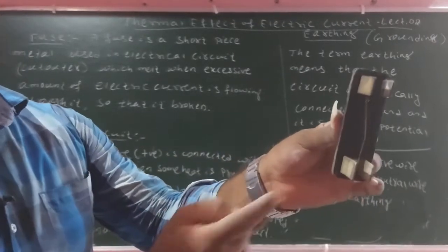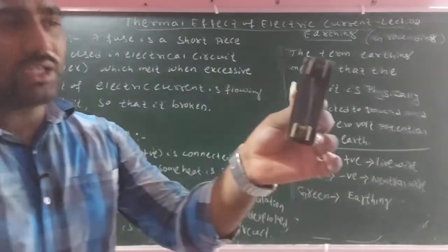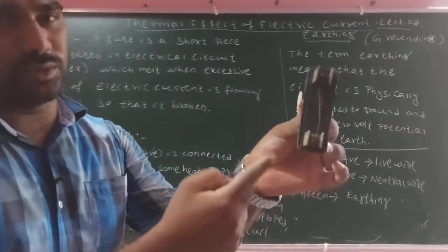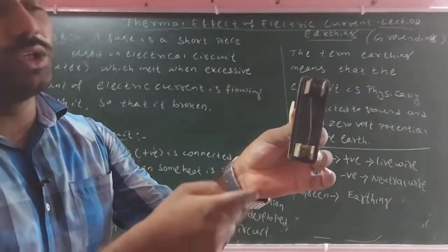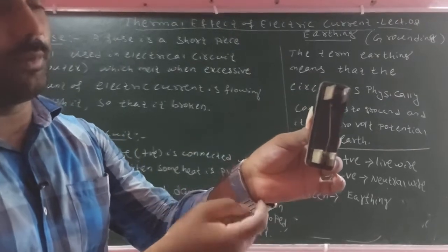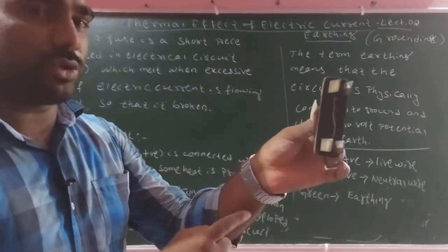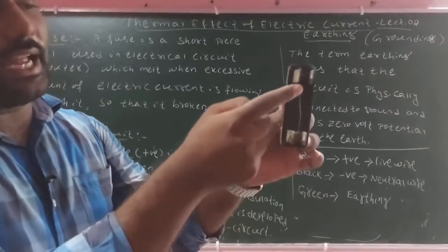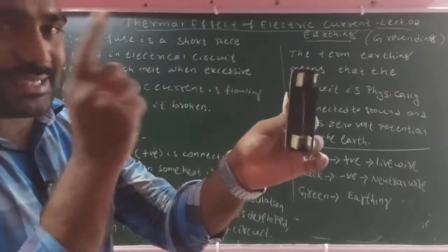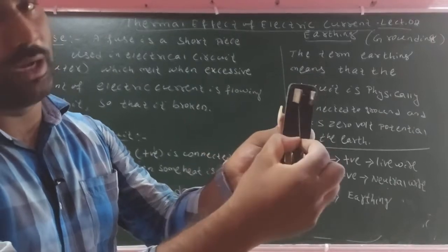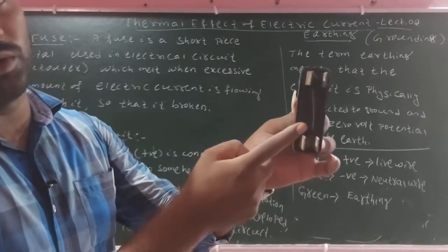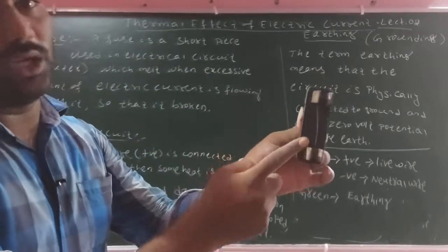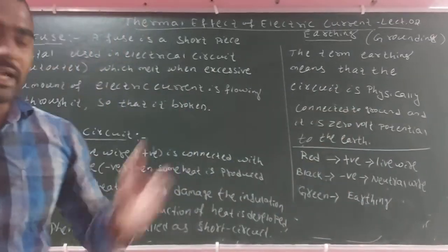Look at this — this is a big fuse because we have a large amount of heat production. It will pass around 62 to 63 amperes. In our home circuit we use a smaller fuse because there is little heat. If we have an excess amount of heat, it will melt. This is how a fuse works simply. This was the second term — short circuit.